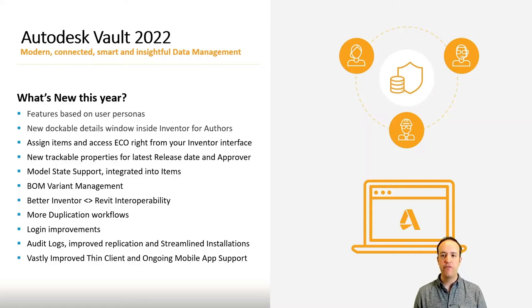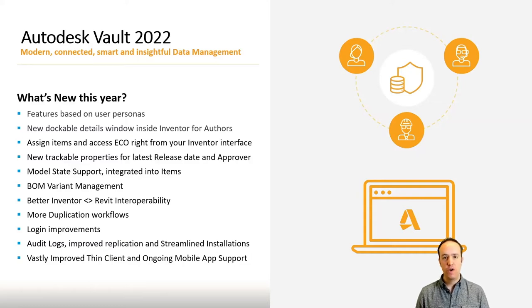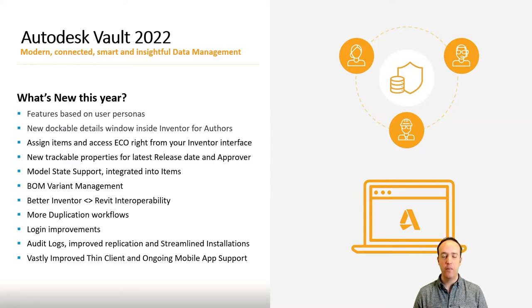Just to pick out a couple of my favorites. At last, we have trackable and traceable properties for both latest release date and approver, which we can push across into our revision table. This has been a bugbear for not just myself but the rest of my team here at Man and Machine and throughout the industry for a number of years. Finally, we have that functionality embedded out of the box inside of Vault, so we can get that important data more easily inside of our revision tables.